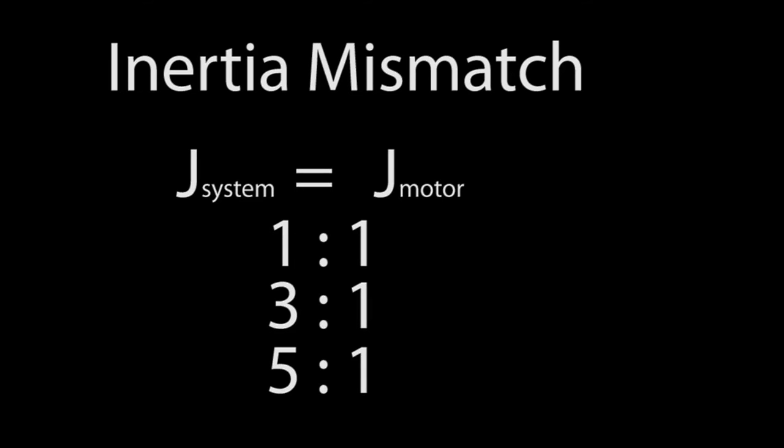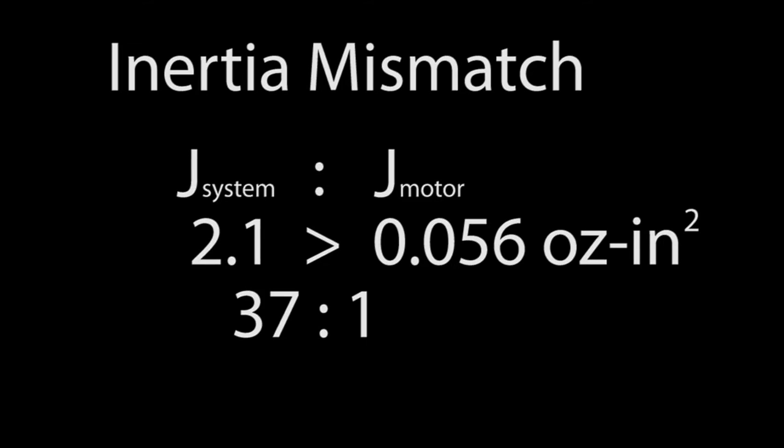How do we do with our system? Our motor inertia is this. And the system inertia that the motor sees – we call that the inertia reflected back to the motor – is this. That's a 37 to 1 ratio. Which just means that while the motor is perfectly capable of moving this load, it won't be able to get anywhere near close to performing as well as what the curves show.